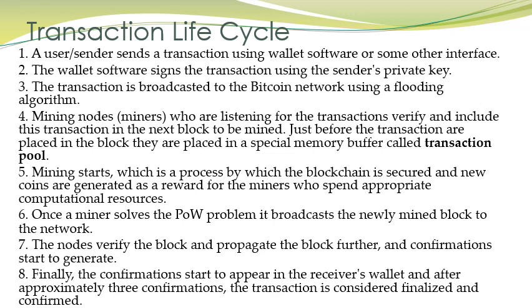Mining then starts, which is the process by which the blockchain is secured and new coins are generated as a reward for miners who spend appropriate computational resources. Miners get coins as an incentive for verifying transactions, which motivates them to spend their computational resources. Once a miner solves the proof of work problem and verifies the transaction, the newly mined block is broadcast to the network, and other nodes verify and propagate the block further.